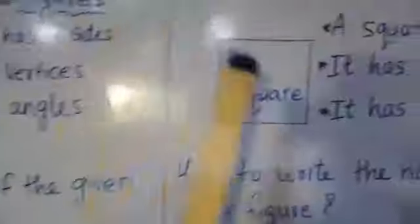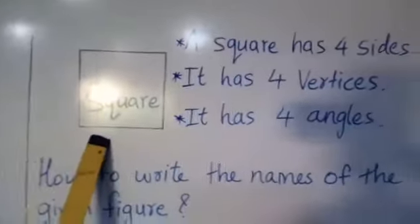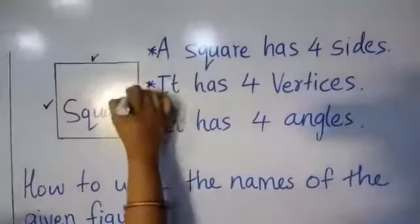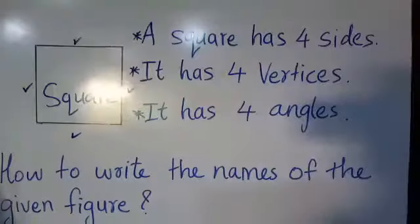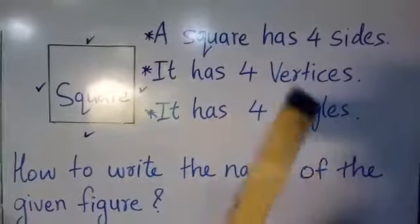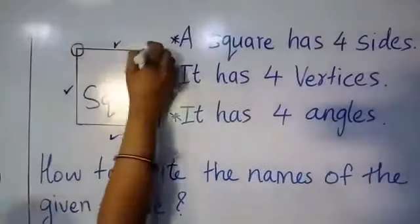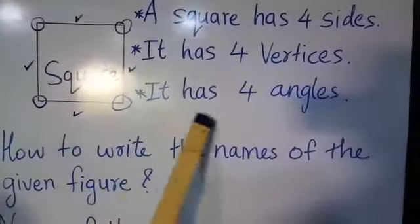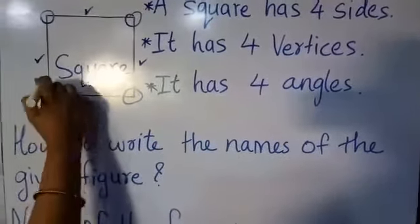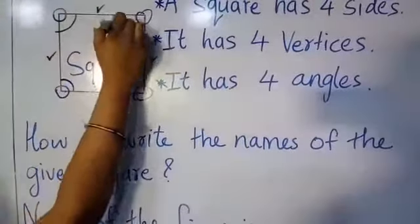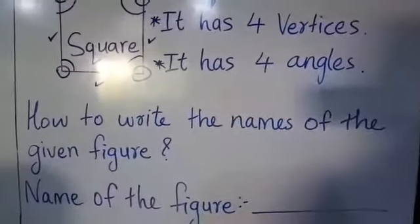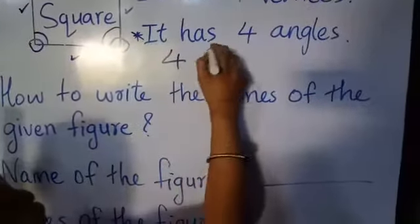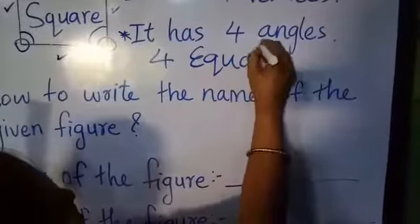Now we move on to square. A square also has four sides — one, two, three, and four — and it has four vertices like a rectangle: one, two, three, four. It also has four angles. But you have to remember that a square has four equal sides — all four sides are equal.